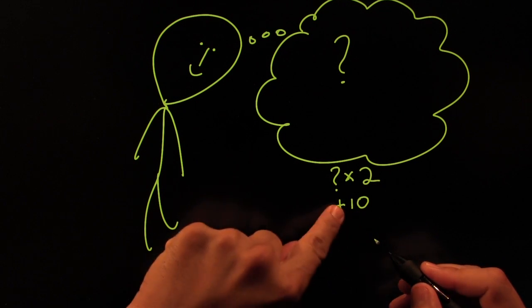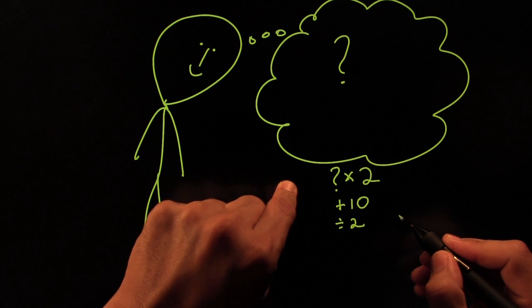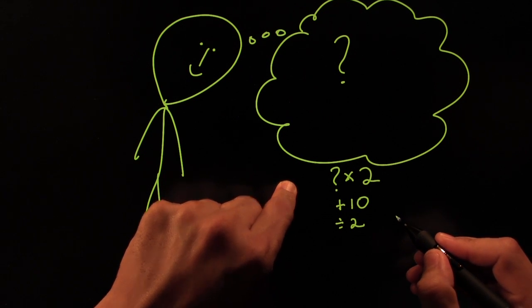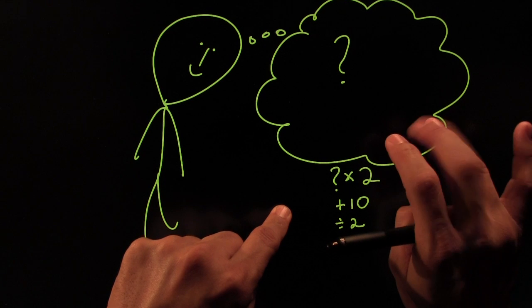Now after you've added 10 to it, I want you to divide it by 2. Divide the whole number by 2. And after you've divided by 2, I'll give you some time to think. I told you to make it easy.